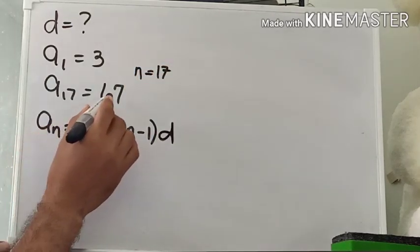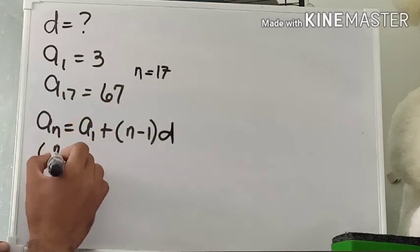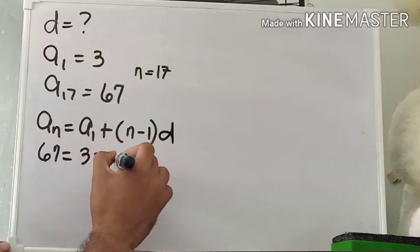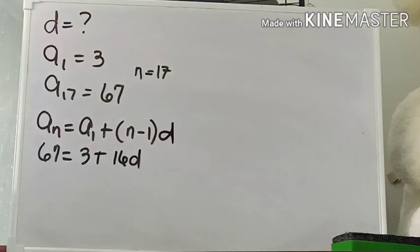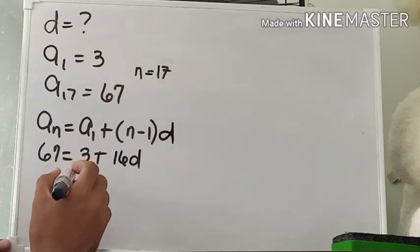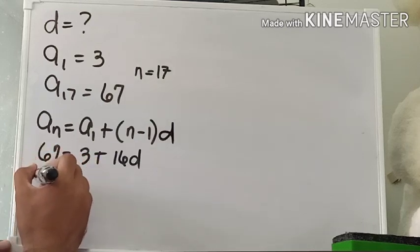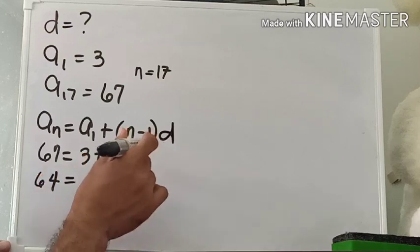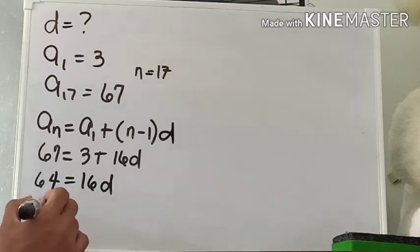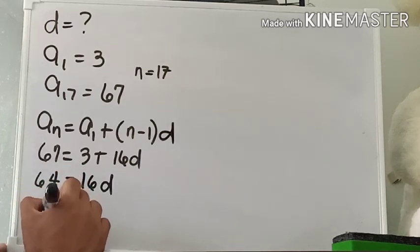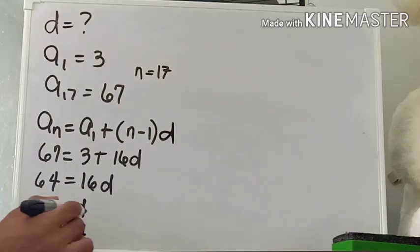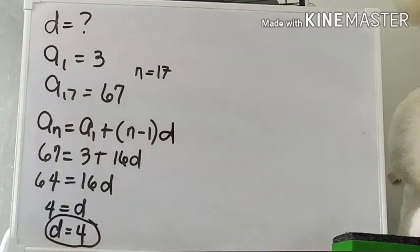We have 67 = 3 + (17 − 1)d, which is 67 = 3 + 16d. Subtracting 3 from both sides: 64 = 16d. Dividing both sides by 16: d = 4. Therefore the common difference is 4, and the solution to the problem is 4.